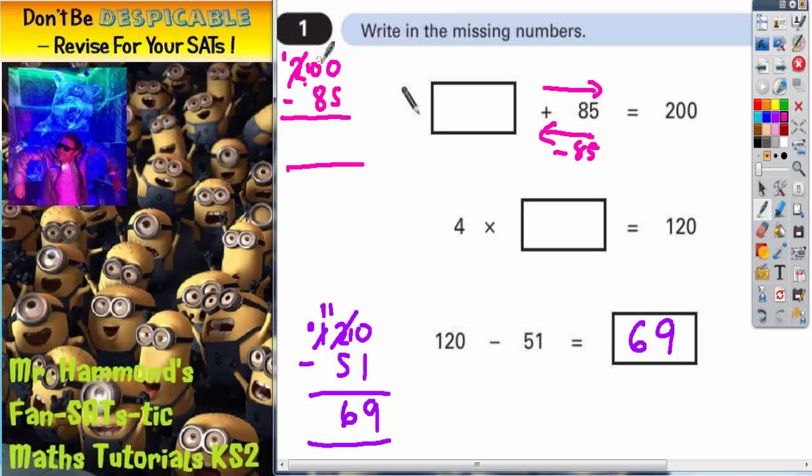That now makes 10. Now we can borrow from this 10. That makes 9, that makes 10. So 10 take away 5 is 5. 9 take away 8 is 1. And 1 take away nothing here is 1. So the final answer must be 115.